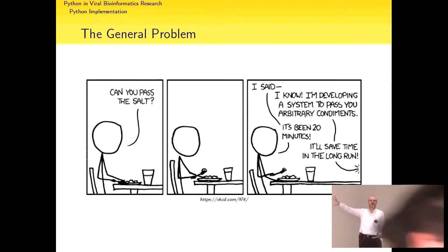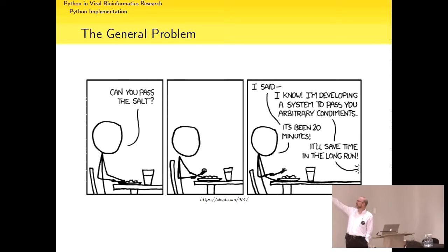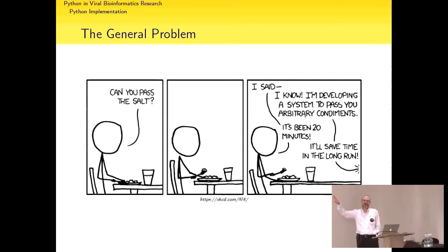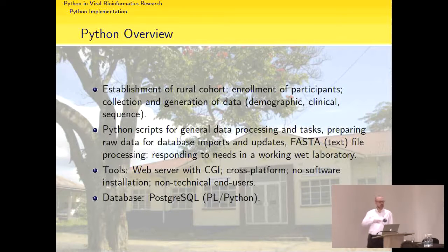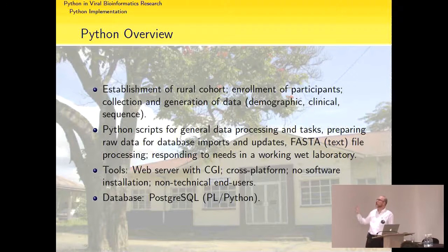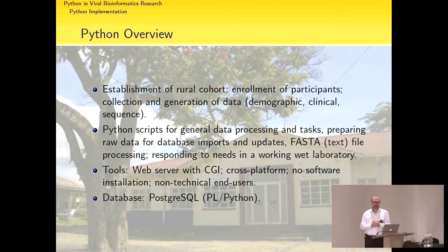That was my philosophy — a general solution — and unfortunately it's been several years and you're still busy. I think there's merit in this, but you also need to realize there's a trade-off between how general you can make a solution and how much time you can spend on it. This is a picture of the cohort site I set up for my study. We enrolled participants, drew blood, went into the lab for the wet lab side, and collected demographic, clinical, and sequence data.